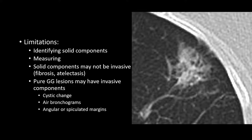Conversely, not all pure ground glass nodules are non-invasive. A pure ground glass nodule with angular borders, intermixed cystic change, air bronchograms, and pleural tagging increases the likelihood of being invasive even without clearly identifiable solid components. The case shown was an invasive pulmonary adenocarcinoma with acinar features. There are CT features that help separate purely ground glass invasive lesions from purely ground glass non-invasive lesions.